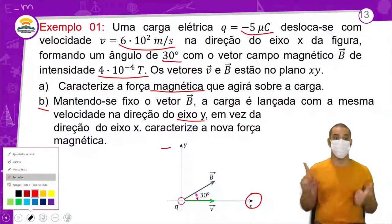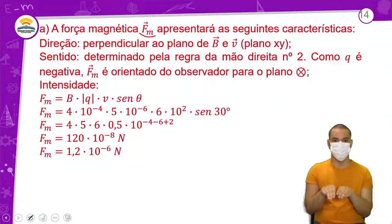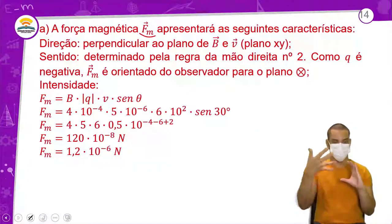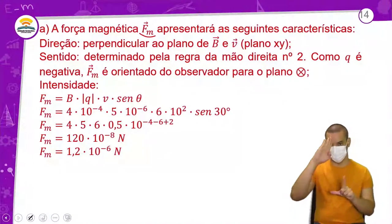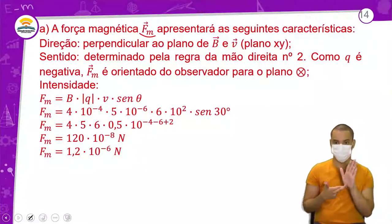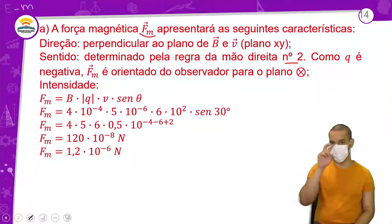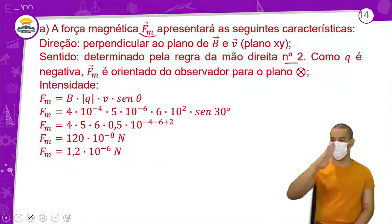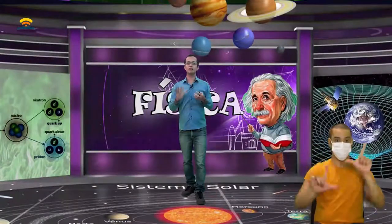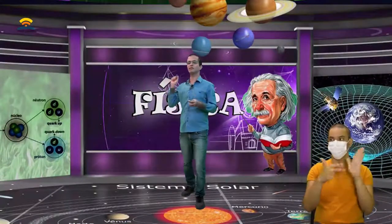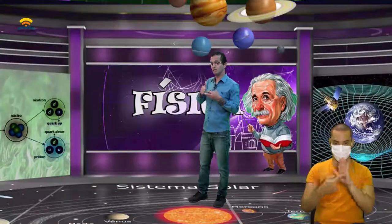Primeiro caso perguntado: para onde atua a força magnética? A força magnética FM apresentará as seguintes características. Direção: perpendicular ao plano XY de V e B. Sentido: determinado pela regra da mão direita número 2. Como a carga é negativa, a força magnética é orientada do observador para o plano — é como se estivesse saindo de vocês e entrando na TV. Se fosse carga positiva, pela regra da mão direita estaria ao contrário, saindo da TV até você. Como é negativa, é a costa da mão.